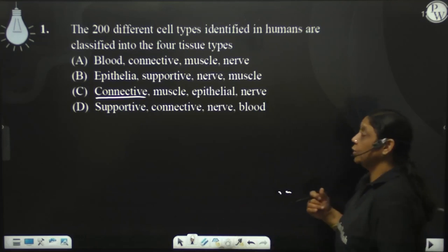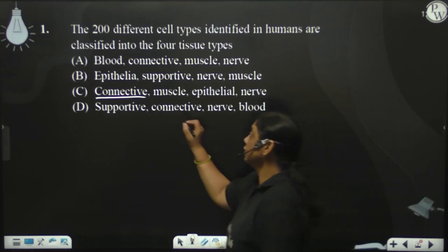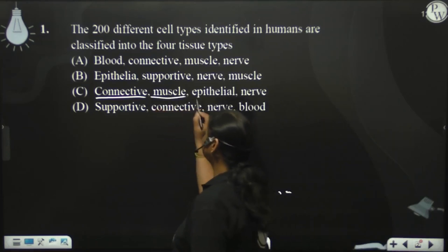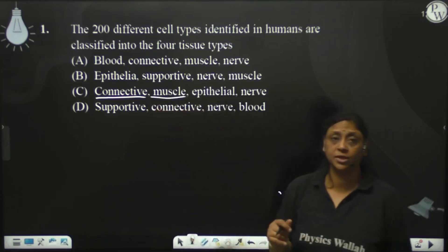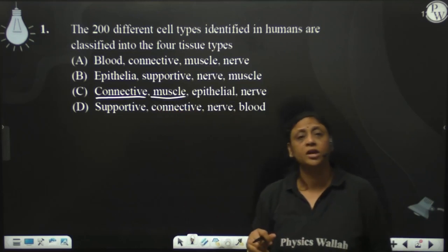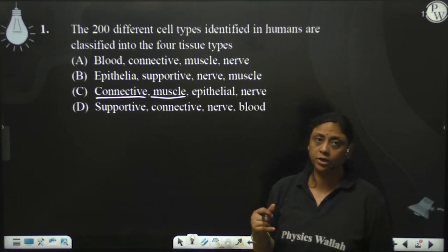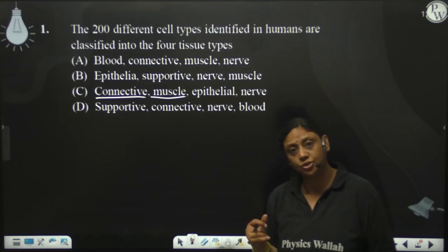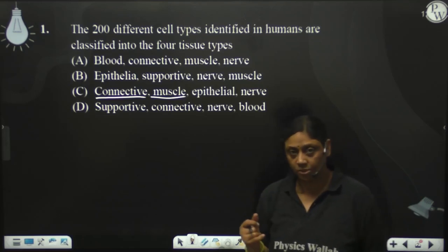Phir hote hain muscle tissues. They provide locomotion and they help in movement of the body. They perform contraction and relaxation leading to movement.